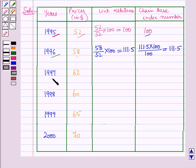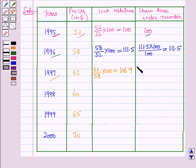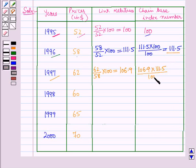For the year 1997, the link relative will be equal to 62 over 58 into 100, which is equal to 106.9. The chain base index number will be equal to the link relative of the current year, that is 106.9, into the chain index of the previous year, that is 111.5, all upon 100, which is equal to 119.2.